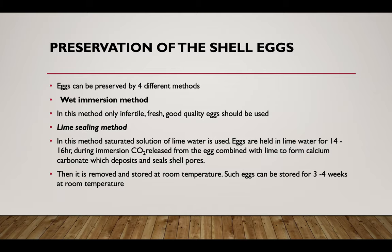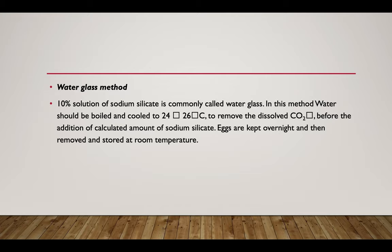Preservation of shell eggs can be achieved by four different methods. In the wet immersion method, only infertile, fresh, good quality eggs should be used. In the lime sealing method, a saturated solution of lime water is used; the egg is held in lime water for about 14 to 16 hours. During immersion, carbon dioxide released from the egg combines with the lime to form calcium carbonate, which deposits and seals the egg shell pores. The egg is then removed and stored at room temperature; such eggs can be stored for about three to four weeks.